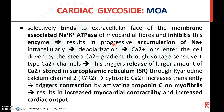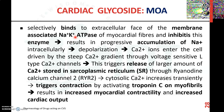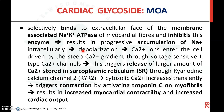Now, the mechanism of cardiac glycosides in increasing myocardial contractility: cardiac glycosides like digitalis will selectively bind with the extracellular phase of the membrane-associated Na+/K+ ATPase enzyme, thereby inhibiting this enzyme. By inhibiting this enzyme, there will be progressive accumulation of sodium ions intracellularly, since this enzyme is responsible for the transport of sodium ions from intracellular to extracellular.